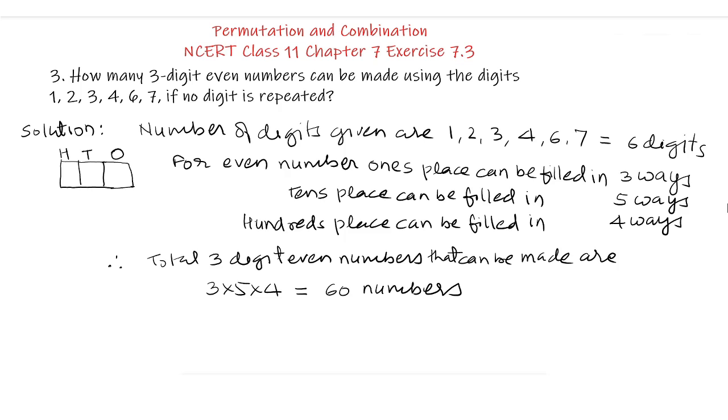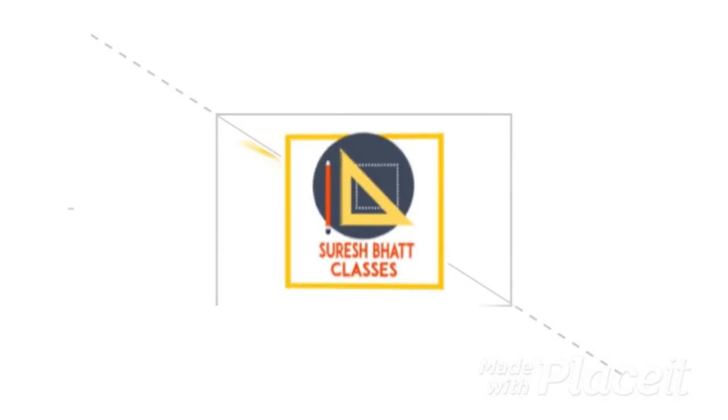numbers. Thus, 60 even numbers can be made using the digits 1, 2, 3, 4, 6 and 7. Here completes this video.